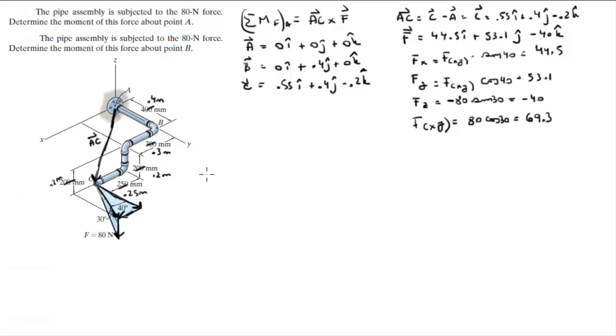So, the moment that F creates about A, like I said before, is given by vector AC cross F. So, you draw your matrix. I, J, K.